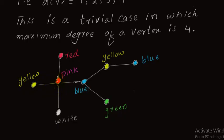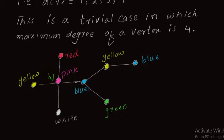Here we have a vertex v in which the maximum degree is four, so all other vertices have degree less than four. When coloring a graph, our focus is to ensure that two adjacent vertices have different colors. In this figure, you can see that all adjacent vertices have a different color. Since the maximum degree is four, we can use five colors to color this graph. So this graph is five colorable when the maximum degree of a vertex is less than or equal to four.